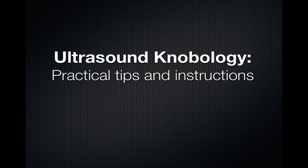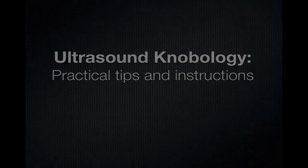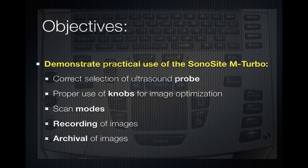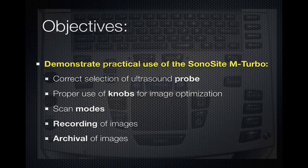Ultrasound Knobology: Practical Tips and Instructions. This is the keypad of a Sonosite M-Turbo. Depending on the year of manufacture, the buttons may be located in different positions, but the functionality remains the same. The objectives of this talk are to demonstrate practical use of the Sonosite M-Turbo, including correct selection of ultrasound probe, proper use of knobs for image optimization, describing scan modes, how to record images, and archival of images.